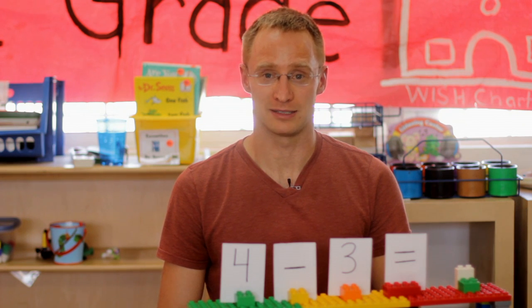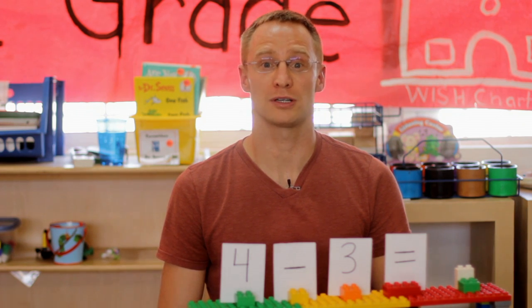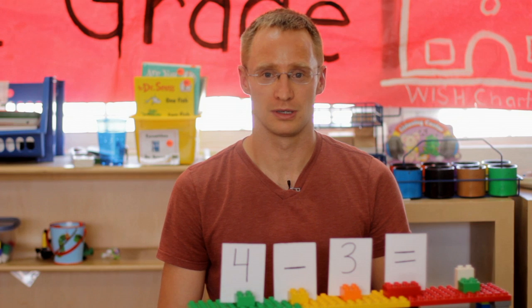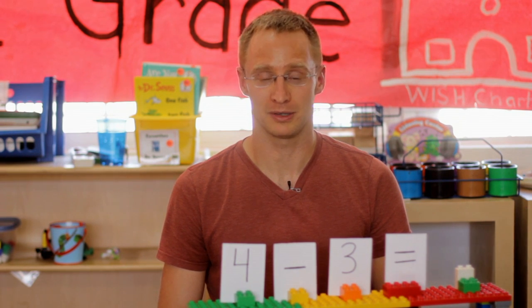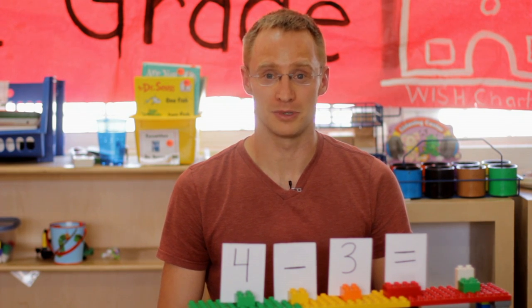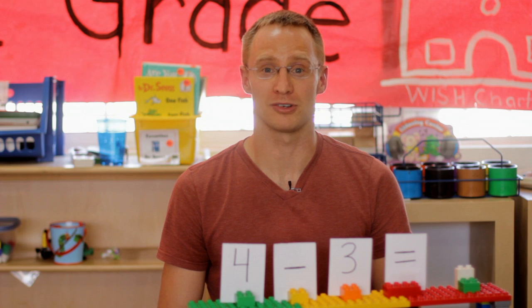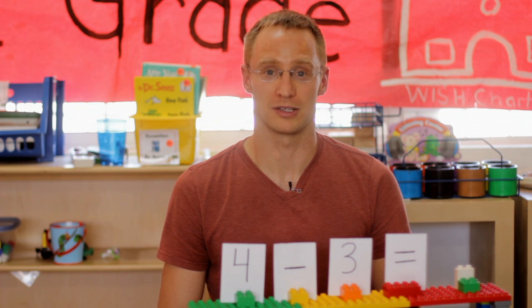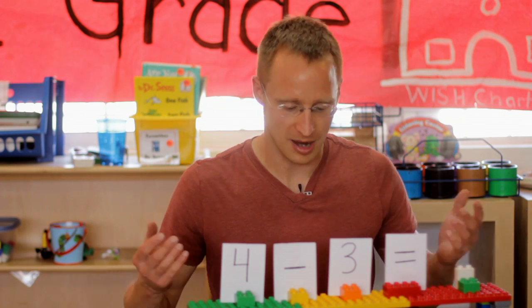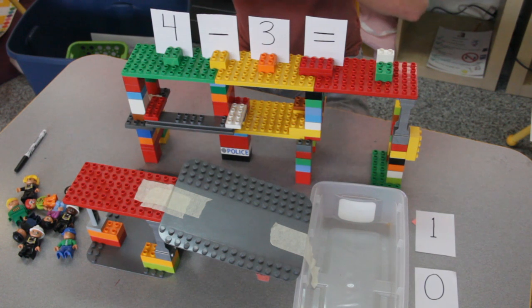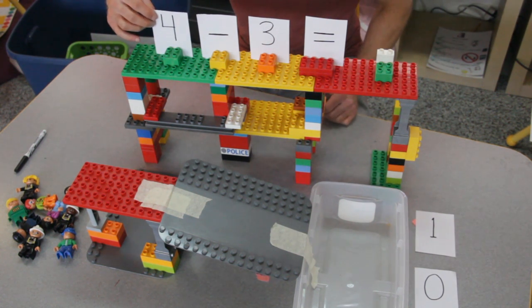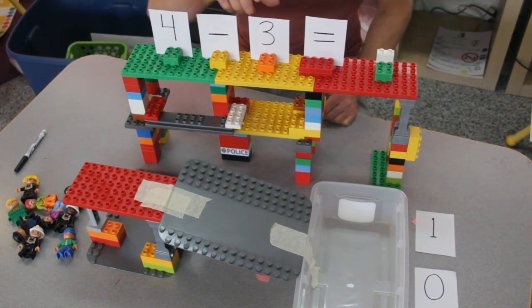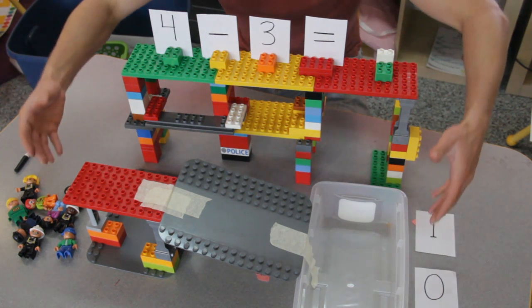One game that the kids love is the subtraction contraption. This will take a little work on your part, but once you have it built, every kid's going to want to do the expected behavior so they can come up and get a turn with the contraption. The contraption is anything like this — build something long and high where you can place numbers in with your minus sign and your equal sign. And then you have the ramp.